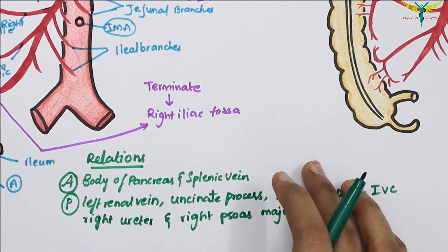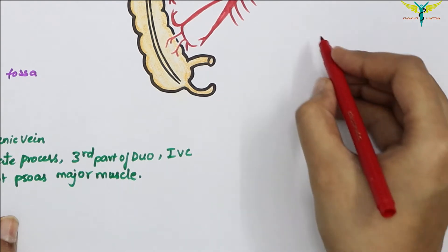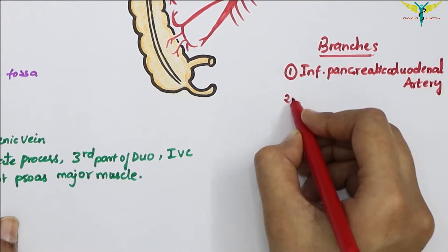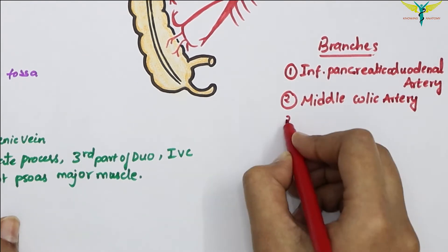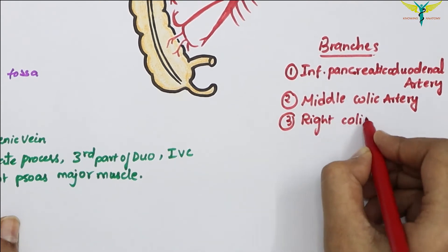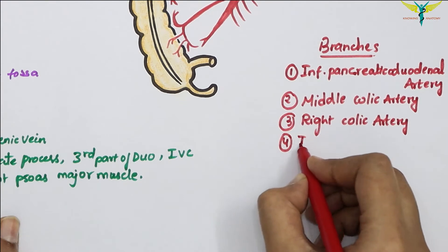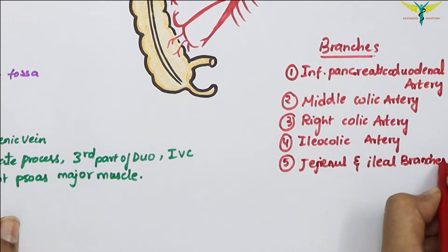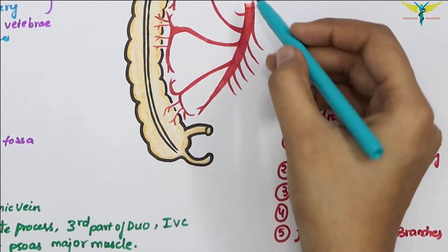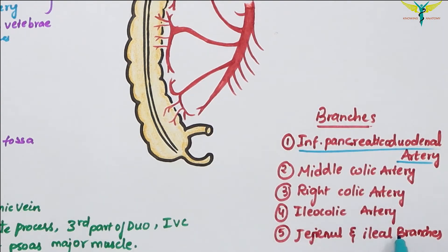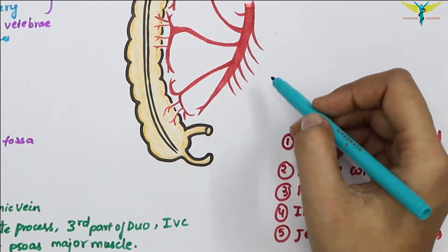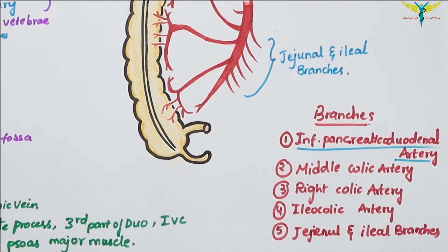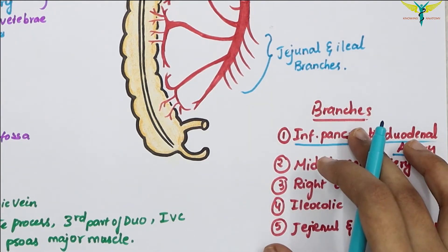Now let's talk about its branches. The superior mesenteric artery gives five branches: first, the inferior pancreaticoduodenal artery; second, the middle colic artery; third, the right colic artery; fourth, the ileocolic artery; and fifth, the jejunal and ileal branches. All branches arise from the right side except the jejunal and ileal branches, which arise from the left side.